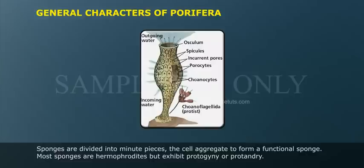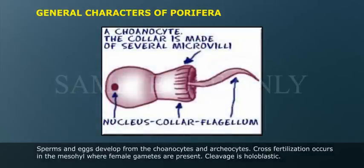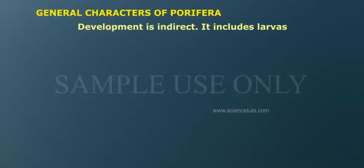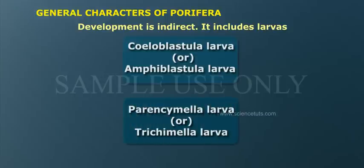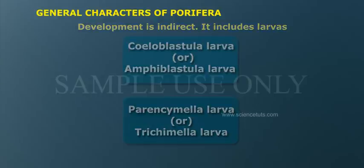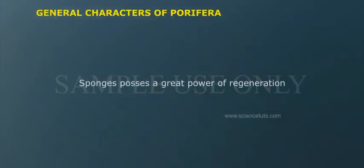Most sponges are hermaphrodites but exhibit protogyny or protandry. Sperms and eggs develop from choanocytes and archaeocytes. Cross fertilization occurs in the mesohyle where female gametes are present. Cleavage is holoblastic. Development is indirect and includes larvae such as coeloblastula, amphiblastula, parenchymula, or trichimella larvae. Sponges possess a great power of regeneration.